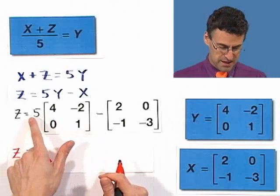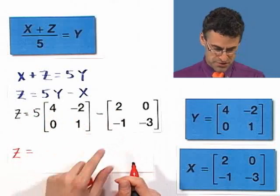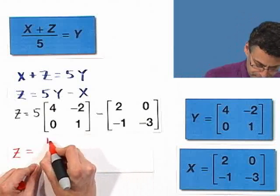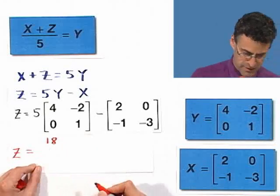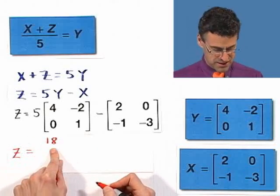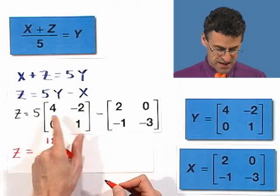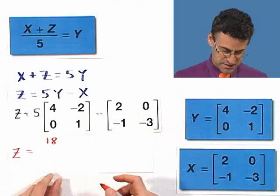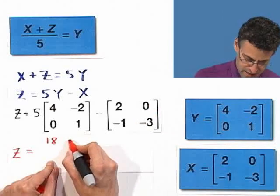So here I see a 20. 20 minus 2 is 18. So the 1, 1 entry of z is 18. Then here I see a negative 10 minus 0 is just negative 10.